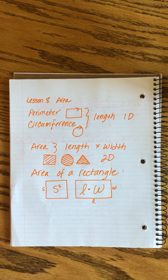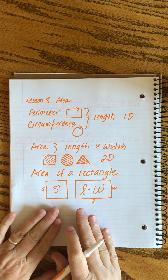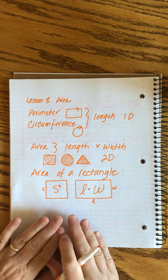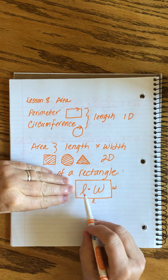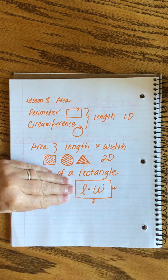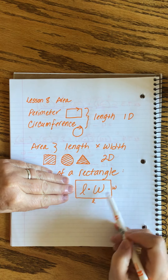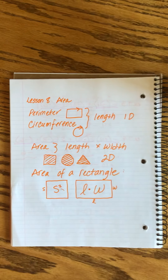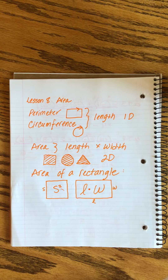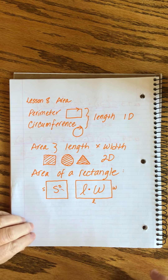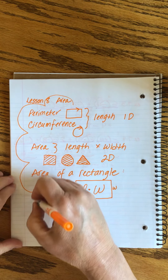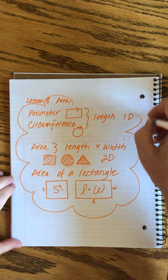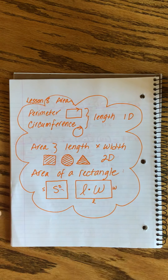Take a minute and write those formulas in the cover of your book. Notice that even if you forget the square formula, if you just use the length-times-width formula for everything it'll work perfectly — you'd just take two sides of the square. Now let's go on and see how we can apply this in a problem.